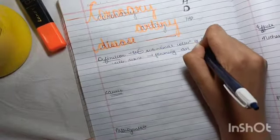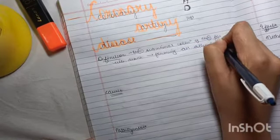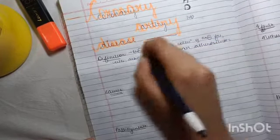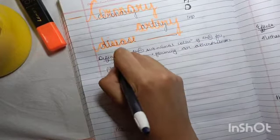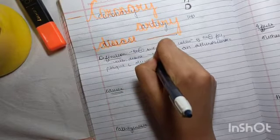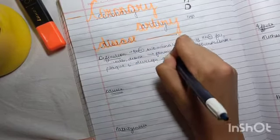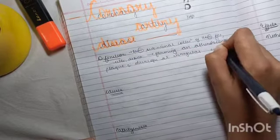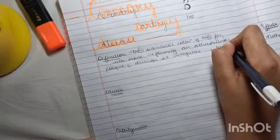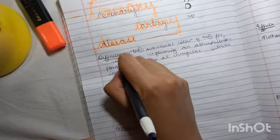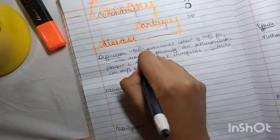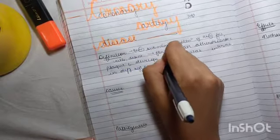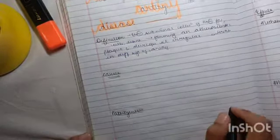This atherosclerotic plaque develops at irregular intervals in different segments of the artery.